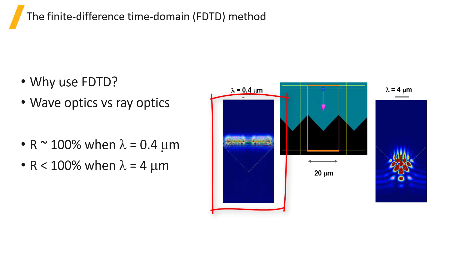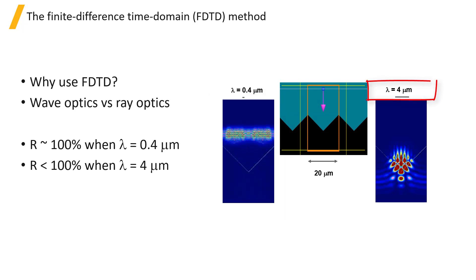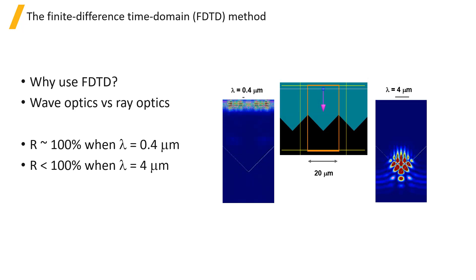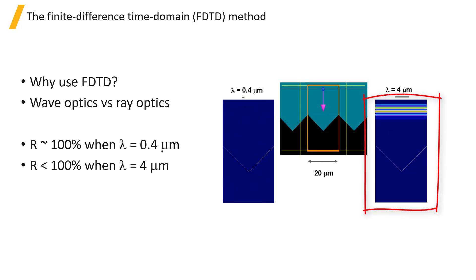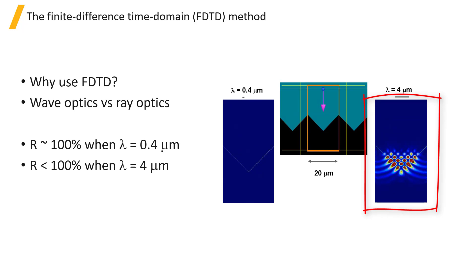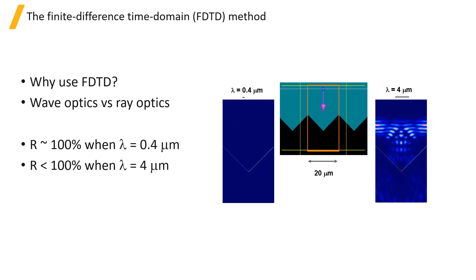The second wavelength we will use is 4 microns, and the structure has the same 20 micron pitch. Now we can see completely different behavior because there is clearly a substantial transmission, and we can even see the penetration of the evanescent field into the air. To correctly solve the second wavelength, we need a method like FTTD.